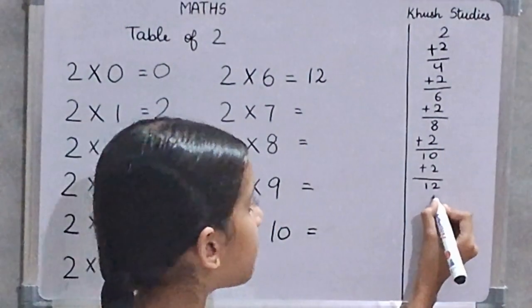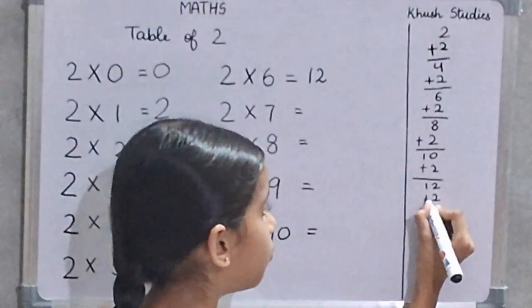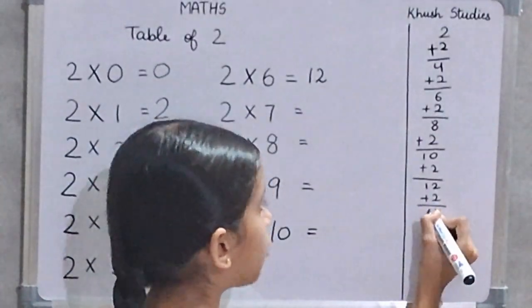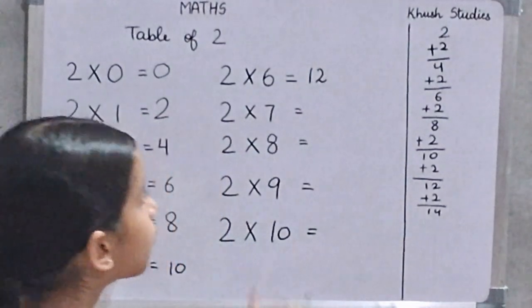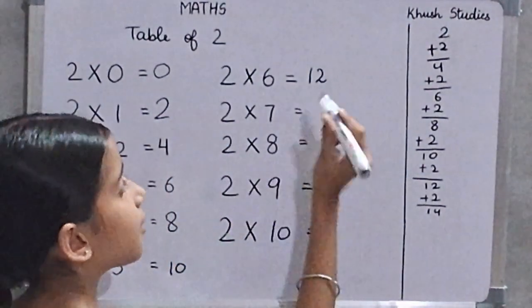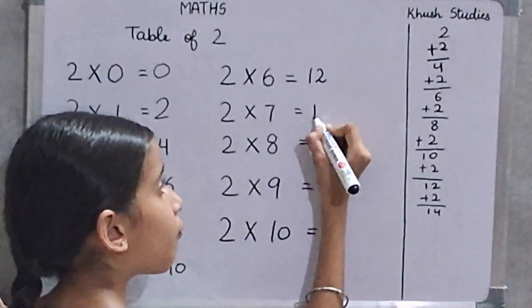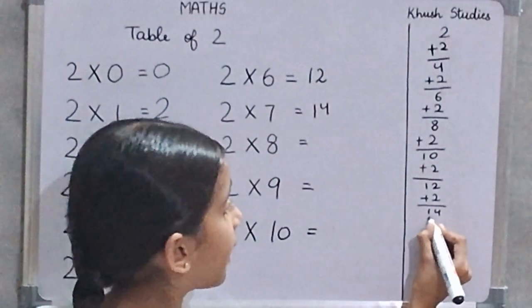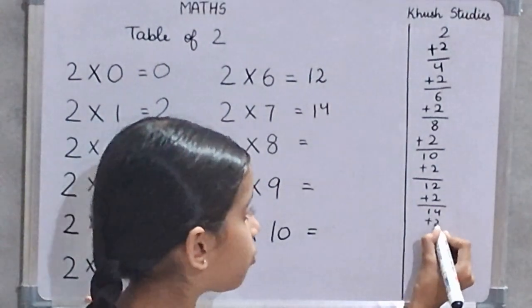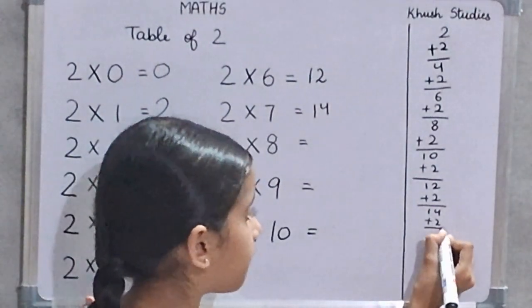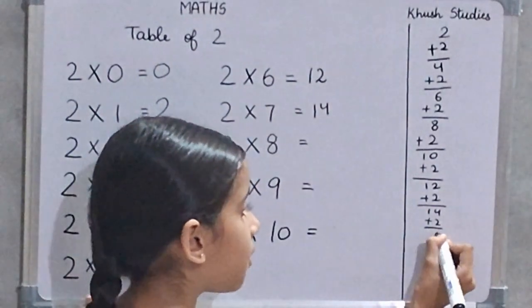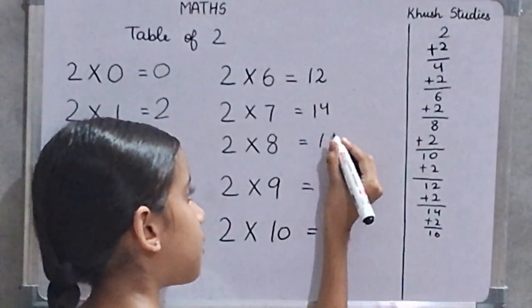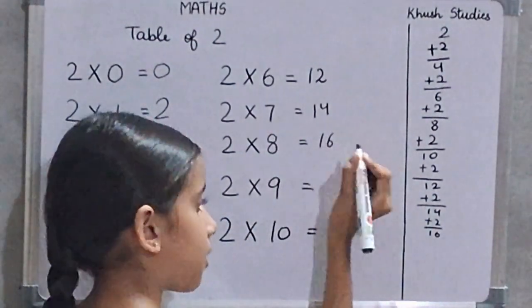Now, we will add 2. 12 plus 2 is 14. So, 2 sevens are 14. Now, 14 plus 2 is 16. So, 2 eights are 16.